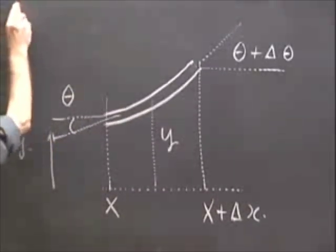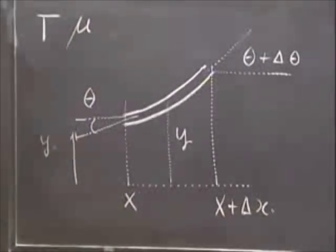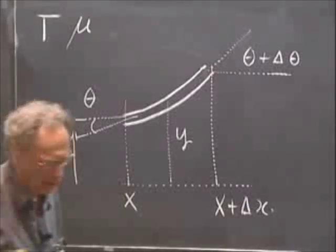We have a tension T on the line and mu is the mass per unit length. So you tell me what the mass per one meter is, and I know what mu is. It's the mass per unit length.